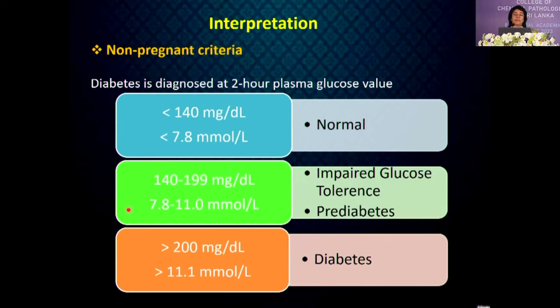The interpretation of OGTT results depends on the patient's age, body weight, physical activity and certain drugs. For non-pregnant patients screened for type 2 diabetes, a 2-hour plasma glucose value greater than 200 mg/dL indicates diabetes.